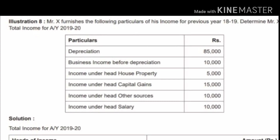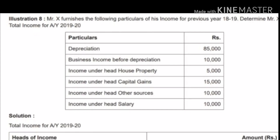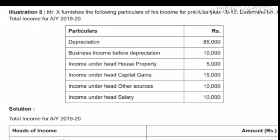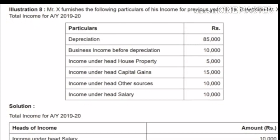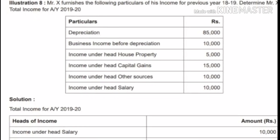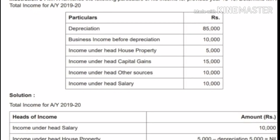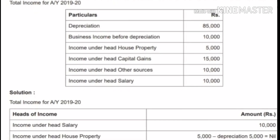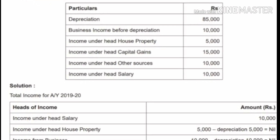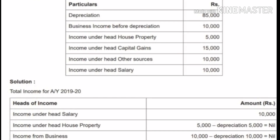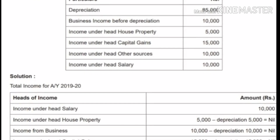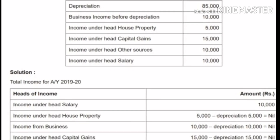Problem: Mr. X furnishes the following particulars of his income for the previous year 2018-19. Determine Mr. X's total income for assessment year 2019-20. Depreciation: ₹85,000. Business income before depreciation: ₹10,000. House property: ₹5,000. Capital gain: ₹15,000. Other sources: ₹10,000. Salary: ₹10,000. He has total depreciation of ₹85,000 but only ₹10,000 business income, so it cannot be fully set off. There is unabsorbed depreciation that can be set off against other incomes, except salary.